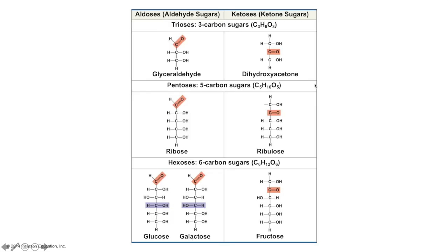This table shows how we can categorize sugars based on whether their carbonyl group is terminal, forming an aldehyde group — also known as an aldose or aldehyde sugar — or there is an internal carbonyl group, a ketone, called a ketose or ketone sugar. The rows show how the number of carbons in the skeleton can also be used to categorize sugars: three-carbon sugars make a triose, five a pentose, and six a hexose. So glucose would be described as an aldose and a hexose.